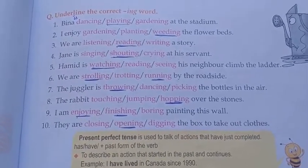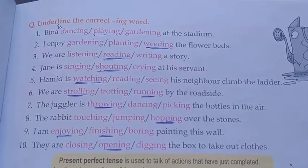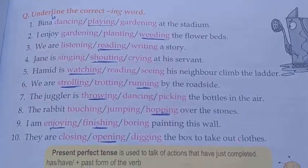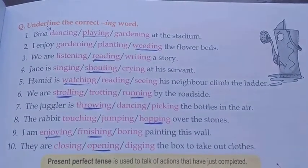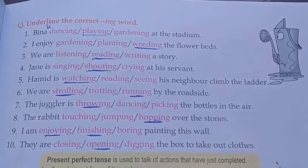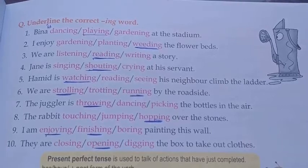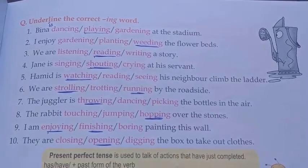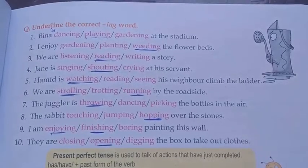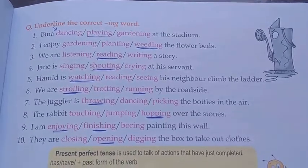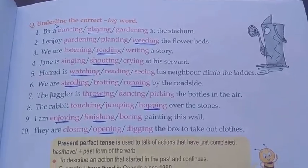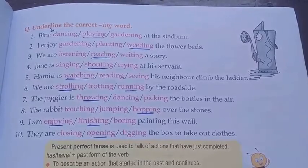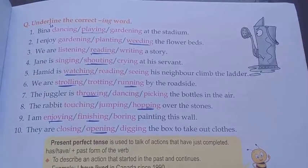Now look at your books, exercise Q part: underline the correct -ing word. Number 2: I enjoy weeding the flower beds. Number 3: we are reading a story — reading. Number 4: Jane is shouting at his servant — shouting. Number 5: Hamid is watching his neighbor climb the ladder — watching.